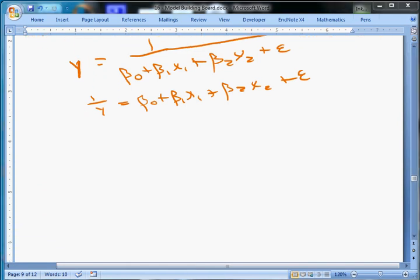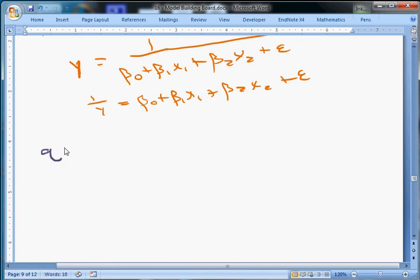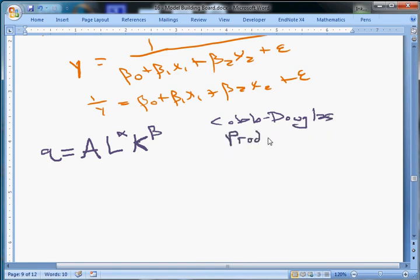Let's say we have y equals beta 0 times x1 to the beta 1 times x2 to the beta 2, where we think it has kind of this obscure relationship, times epsilon. Well, it turns out that if you take the log of both sides, this turns into log of y equals log of beta 0 plus beta 1 log of x1 plus beta 2 log of x2 plus epsilon. One very common one that economists recognize would be this production model. We want to model how much output you're going to produce. You have Q is quantity, that's your output. That's equal to some technological factor, A, times L to the alpha, where L is the units of labor.